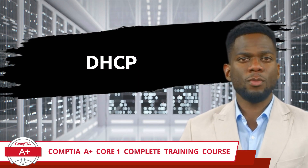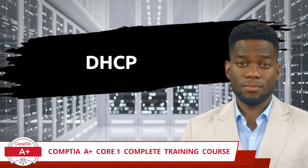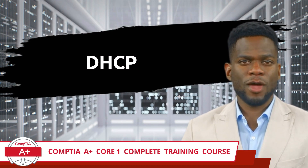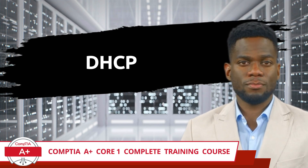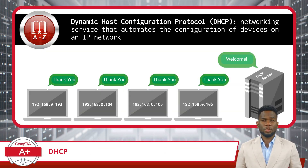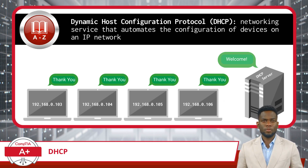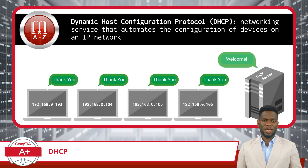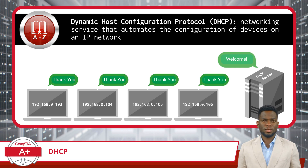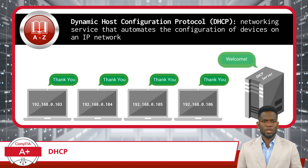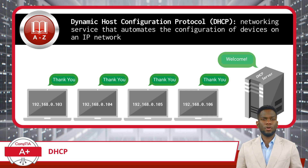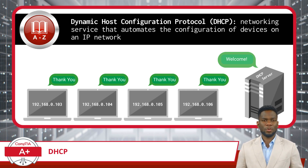CompTIA A Plus Core 1 Complete Training Course, Exam Objective 2.6: Compare and Contrast Common Network Configuration Concepts. DHCP, or Dynamic Host Configuration Protocol, is a networking service that automates the configuration of devices on an IP network. Essentially, DHCP allows network devices, like computers and printers, to automatically obtain IP addresses and other necessary network configurations. This makes it much easier to manage large networks where assigning IP addresses manually would be impractical.